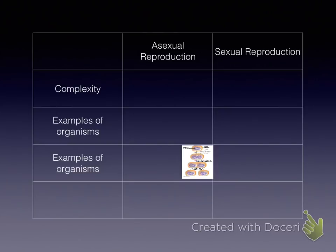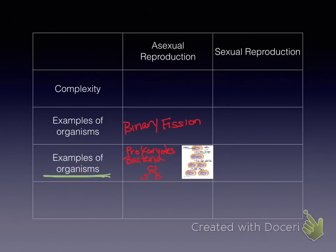Next is binary fission — B-I-N-A-R-Y F-I-S-S-I-O-N. Prokaryotes go through binary fission. All it is is one cell that splits in half. Make sure you write binary fission on your paper. What's an example of a prokaryote we talked about in class? Bacteria. Draw one cell and then draw it splitting in half.